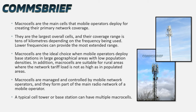Macro cells are the main cells that mobile operators deploy for creating their primary network coverage. They are the largest overall cells and their coverage range is tens of kilometers depending on the frequency being used — lower frequencies can provide the most extended range. Macro cells are the ideal choice when mobile operators deploy base stations in large geographical areas with low population densities. They are also suitable for rural areas where the network traffic load is not as high as in populated areas. Macro cells are managed and controlled by mobile network operators and form part of the main radio network.